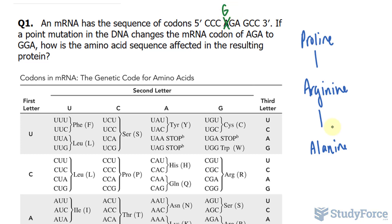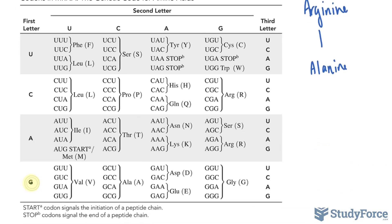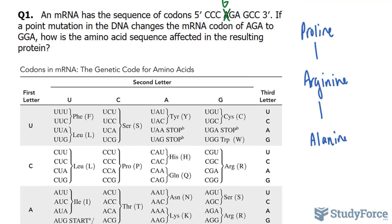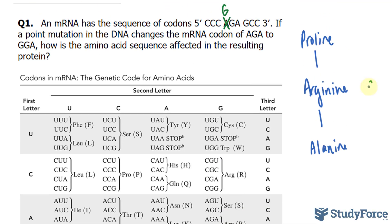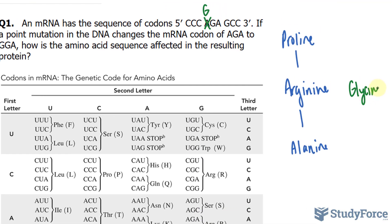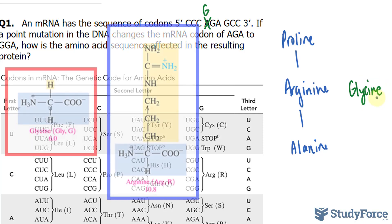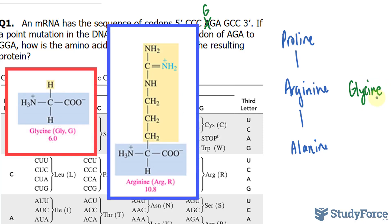Now we've been told that this codon is mutated — the first nucleotide changes to G — so everything stays the same except for arginine. Let's see what GGA translates into: G, G, and A. That's glycine — a big change. Because glycine is non-polar and hydrophobic, whereas arginine is basic and its R-group is positively charged, so it's hydrophilic.